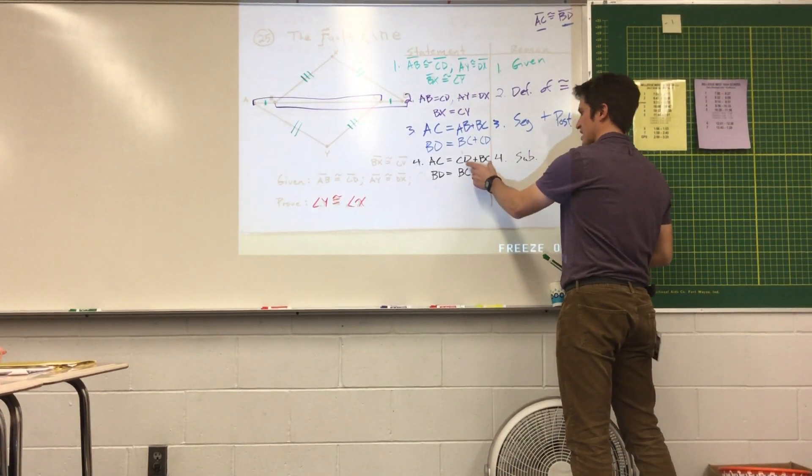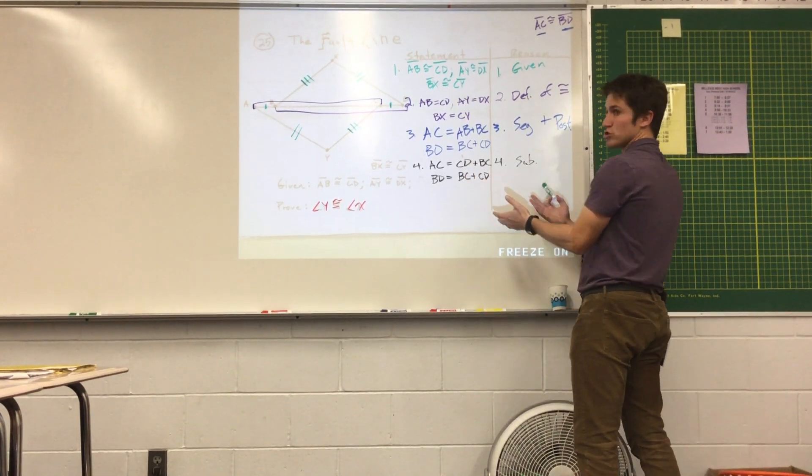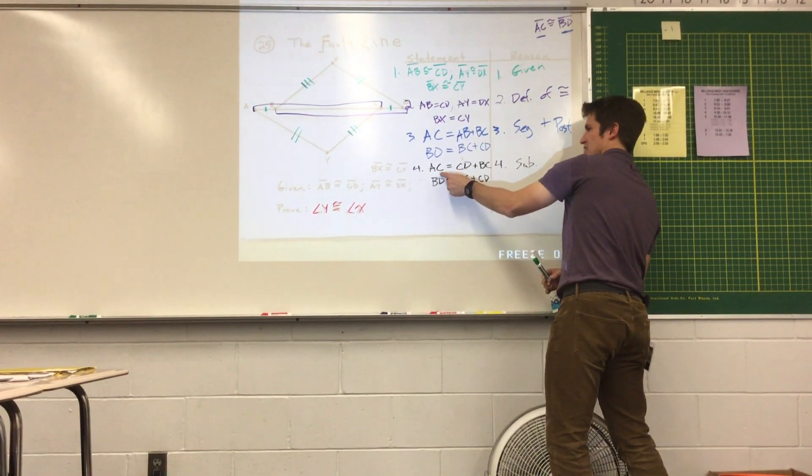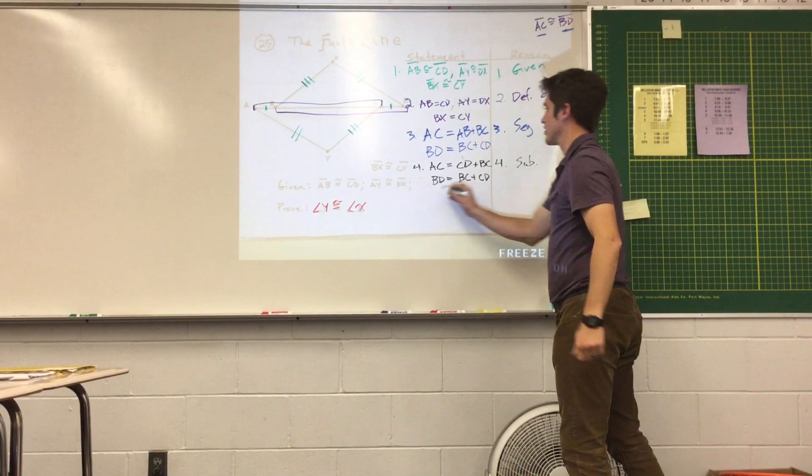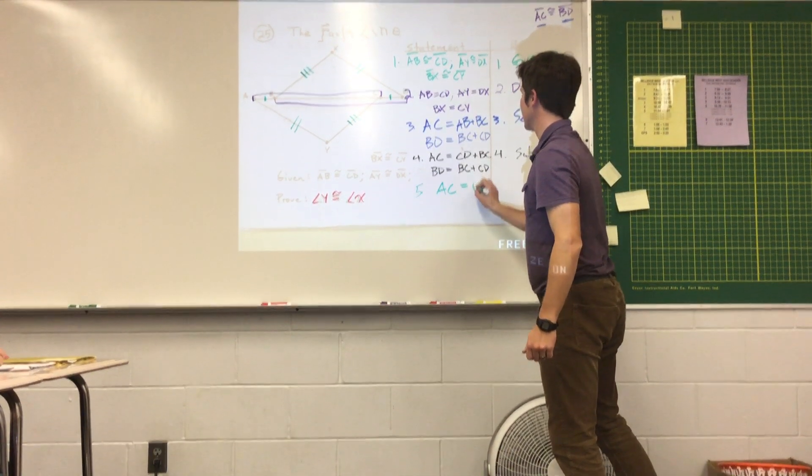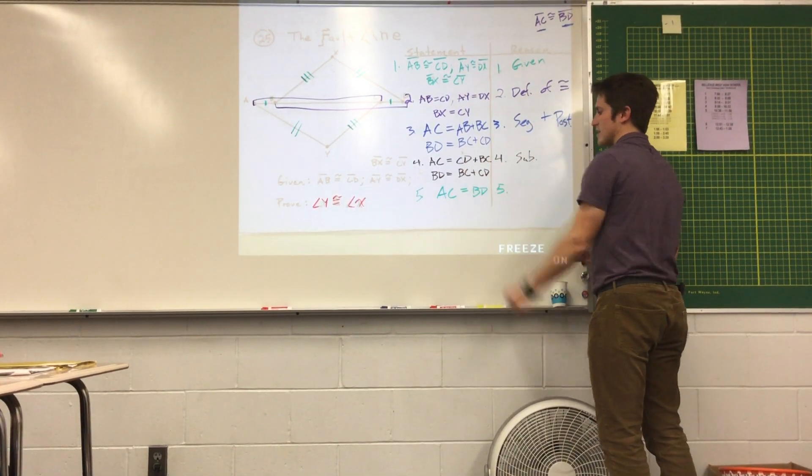Now if they're equal to the same thing, I can set them equal to each other, which is what I want to do. I'm going to say that again. If they're equal to the same thing, I can say that they're equal to each other. So AC is equal to BD. I've found that they're equal to the same thing.